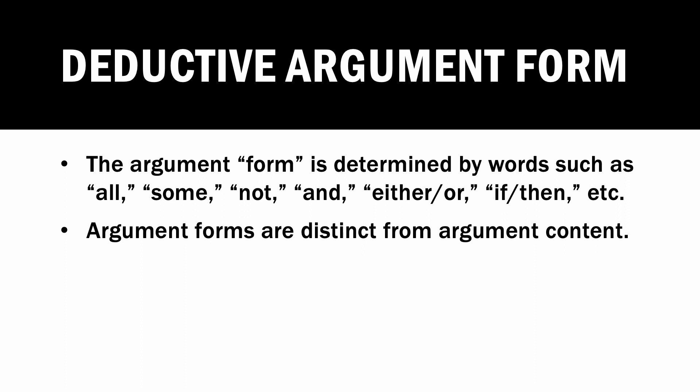Take, for example, all or some. We can make sentences using all and some. We can assert, all Fords — the carmaker — all Fords are cars; some Fords are cars; some Fords are not cars; and no Fords are cars. Sentences using all, some, not, no are known as categorical statements.